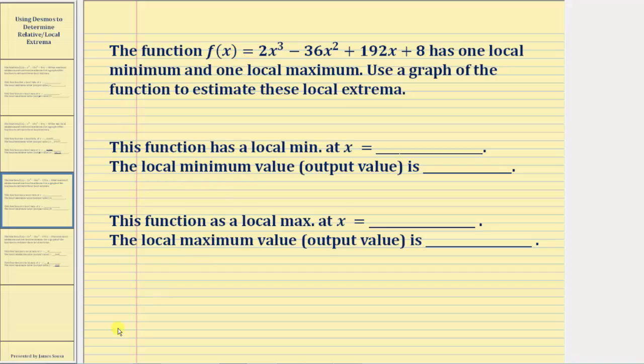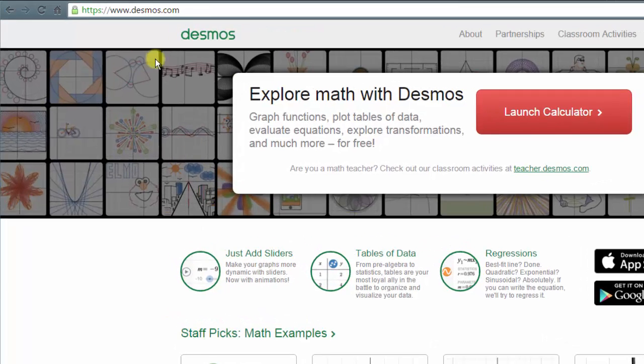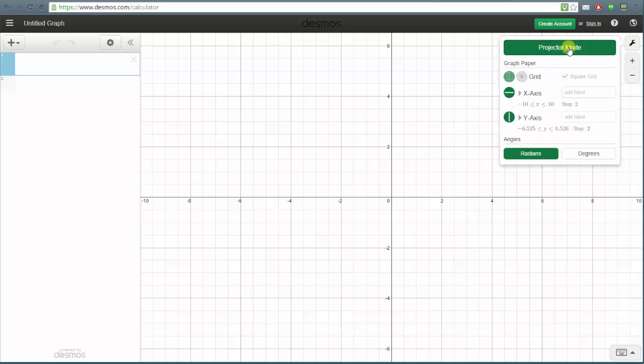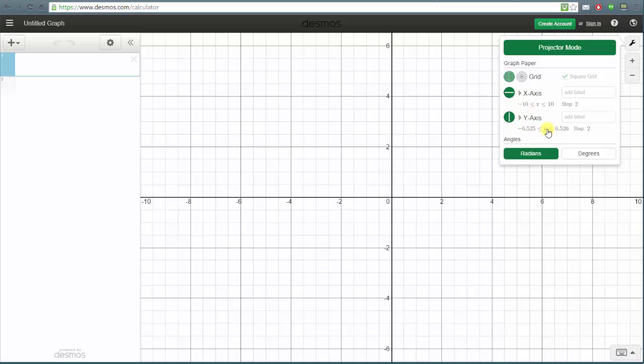So to graph the given function we'll go to desmos.com and click launch calculator. From here let's change to projector mode to make it easier to view the graph. We'll click on the graph settings by clicking on the wrench and click projector mode. Notice below is where we can adjust the x and y axes manually.